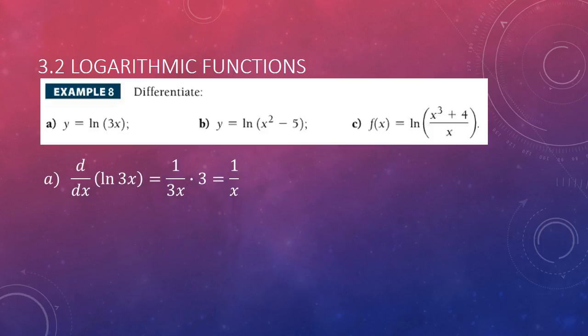Okay, we already talked through that, through a. There it is. So, b, it's 1 over x squared minus 5 times 2x. Why? Because 2x is the derivative of x squared minus 5. So, you have 2x over x squared minus 5.